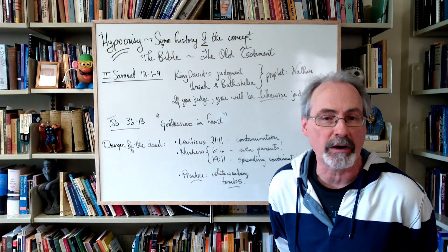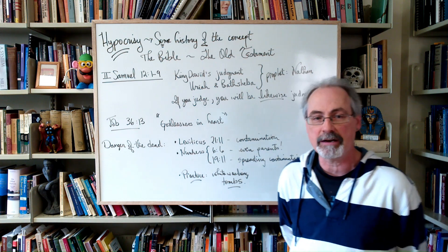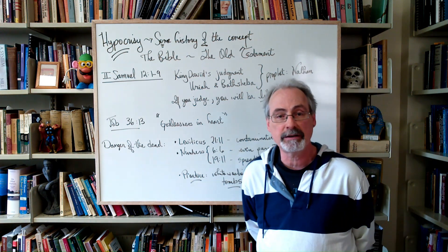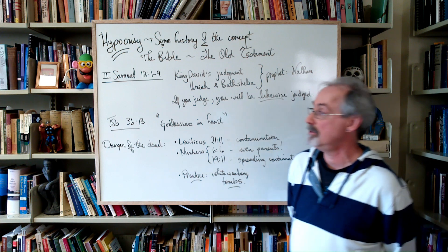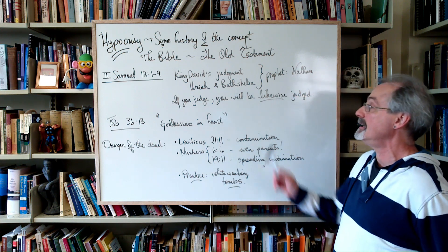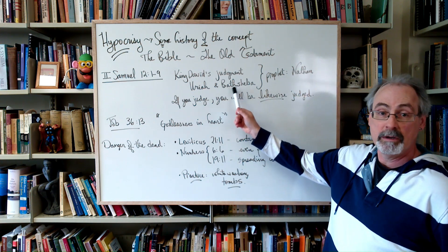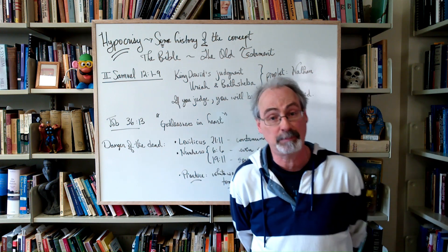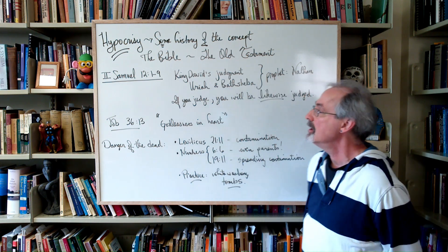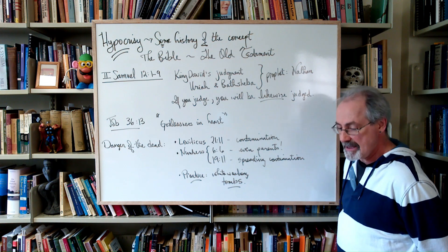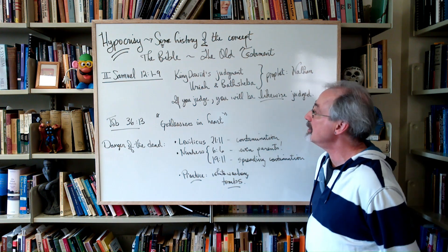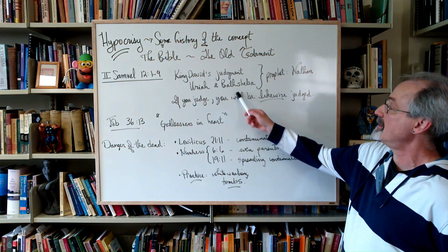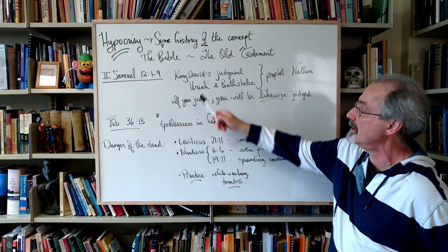He steals all kinds of stuff, not just property, but he will steal people. So this is pretty bad stuff. King David finds he's very attracted to Bathsheba, who is the wife of this guy, Uriah.